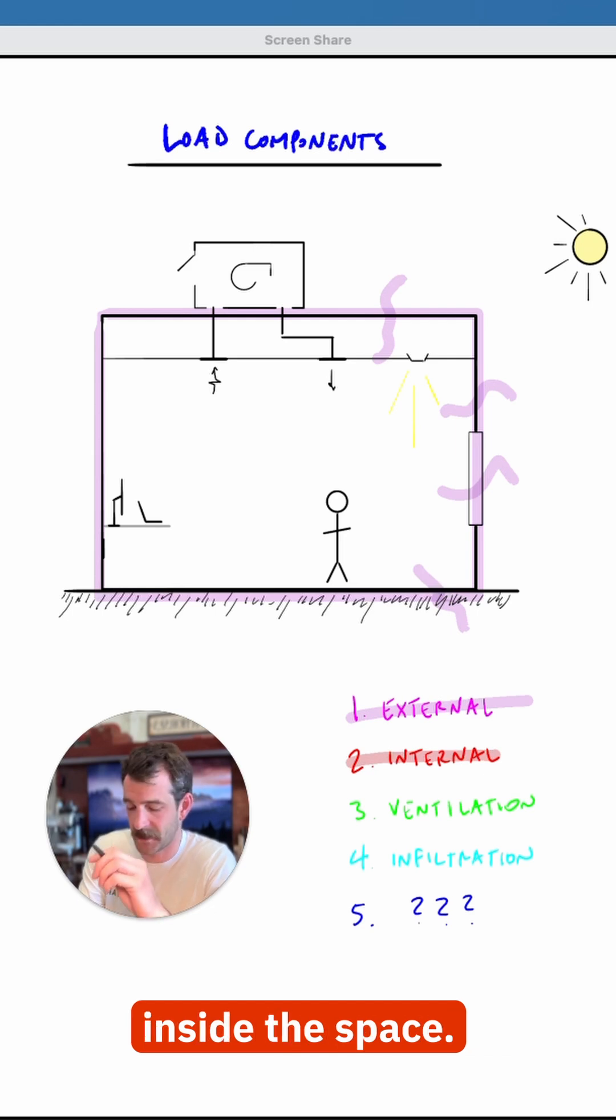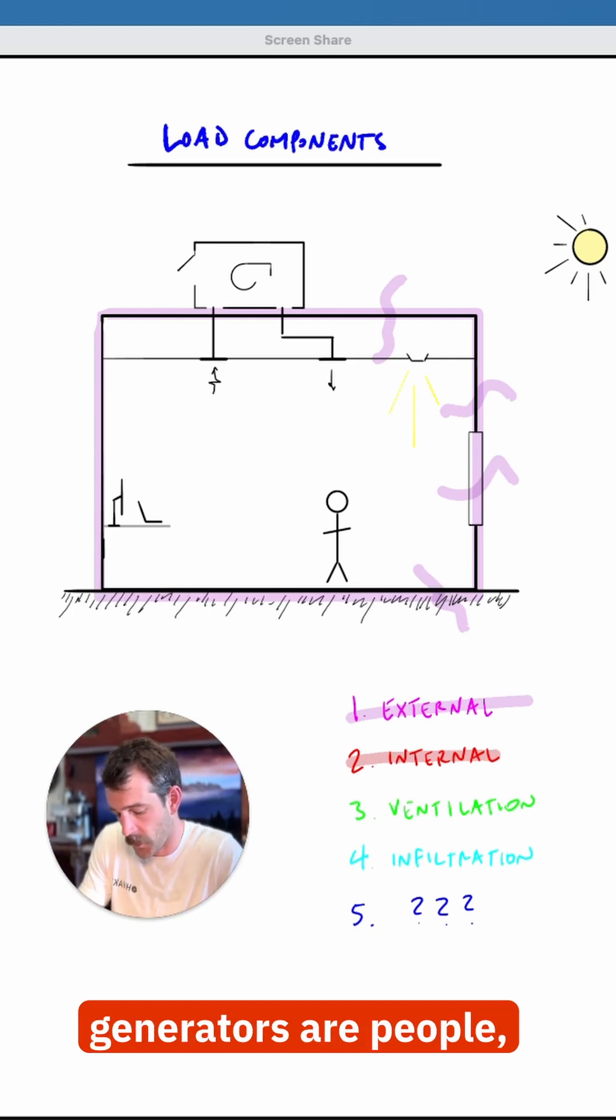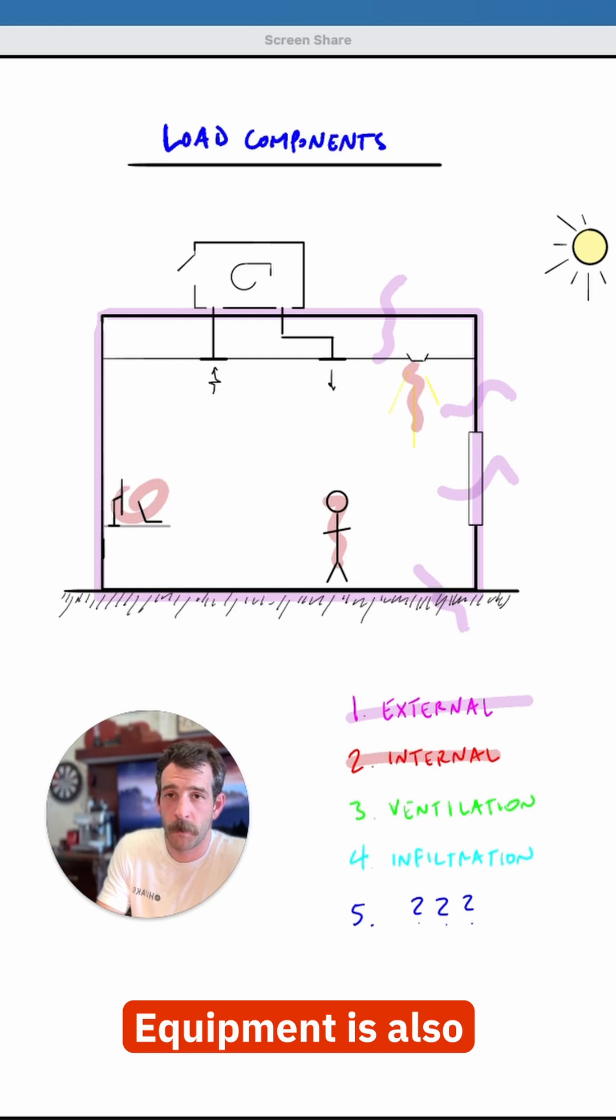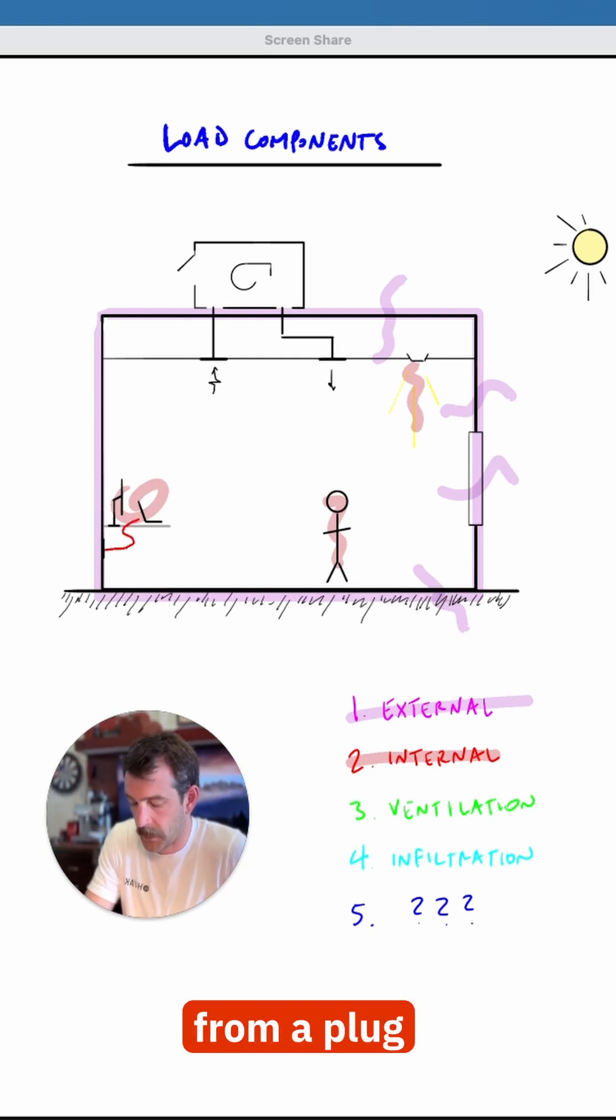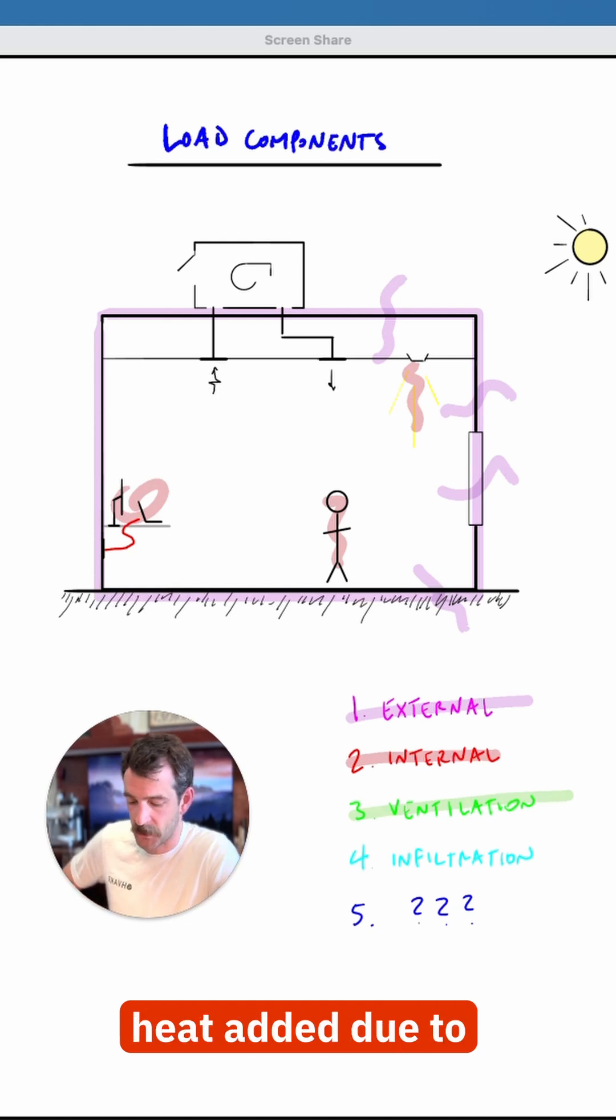Number two is internal. This includes any heat that is being generated inside the space. The most common generators are people, lights, and equipment. Equipment is also called plug load because the heat generated ultimately comes from a plug.